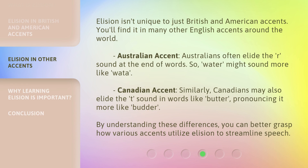Elision isn't unique to just British and American accents — you'll find it in many other English accents around the world. Australian Accent: Australians often elide the R sound at the end of words, so 'water' might sound more like 'watah'. Canadian Accent: Similarly, Canadians may also elide the T sound in words like 'butter', pronouncing it more like 'budder'. By understanding these differences, you can better grasp how various accents utilize elision to streamline speech.